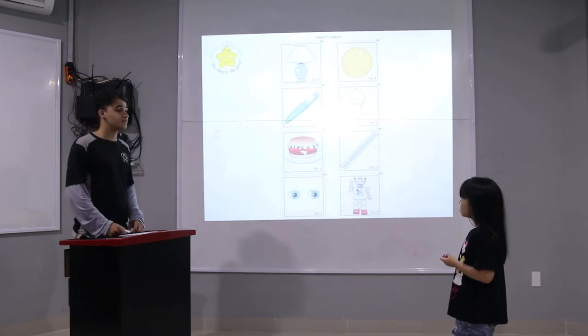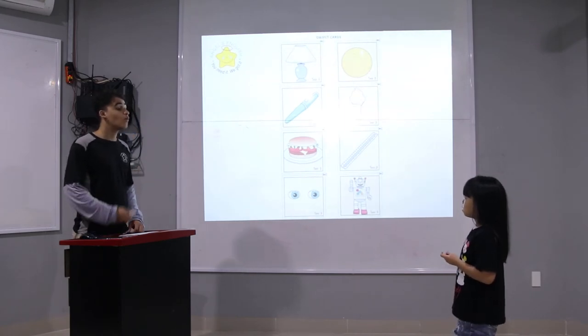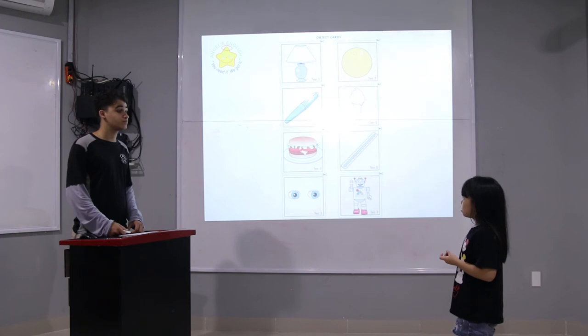What is it? It's a lamp. What color is the lamp? It's white and purple. Good.